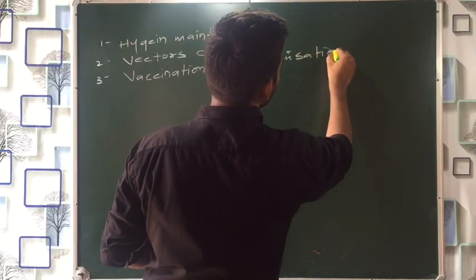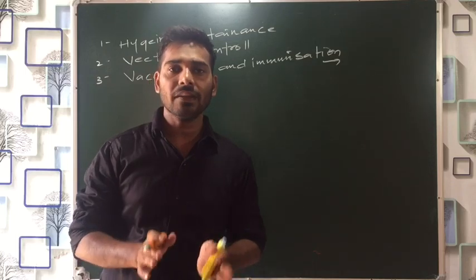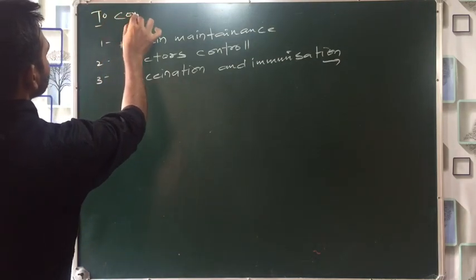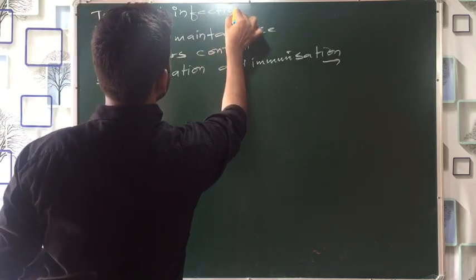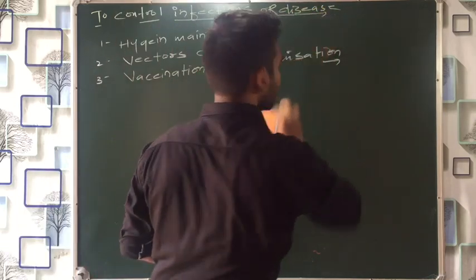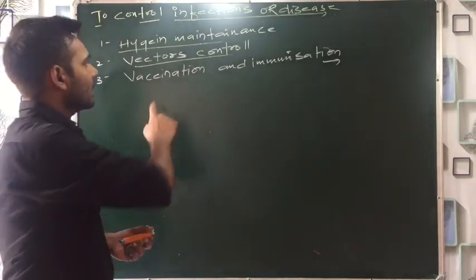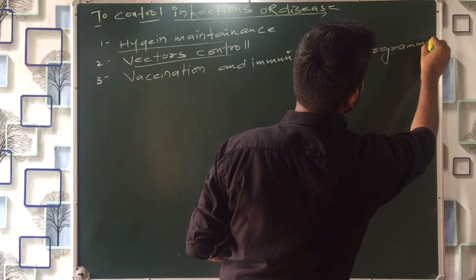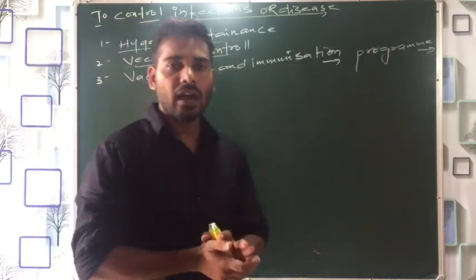The immunization program helps us control infections and diseases. To prevent diseases, we need to control vectors, maintain hygiene, and follow the vaccination and immunization program. These are the preventive measures that can save us from many diseases. Today we are going to talk about these. Let's start with hygiene maintenance.